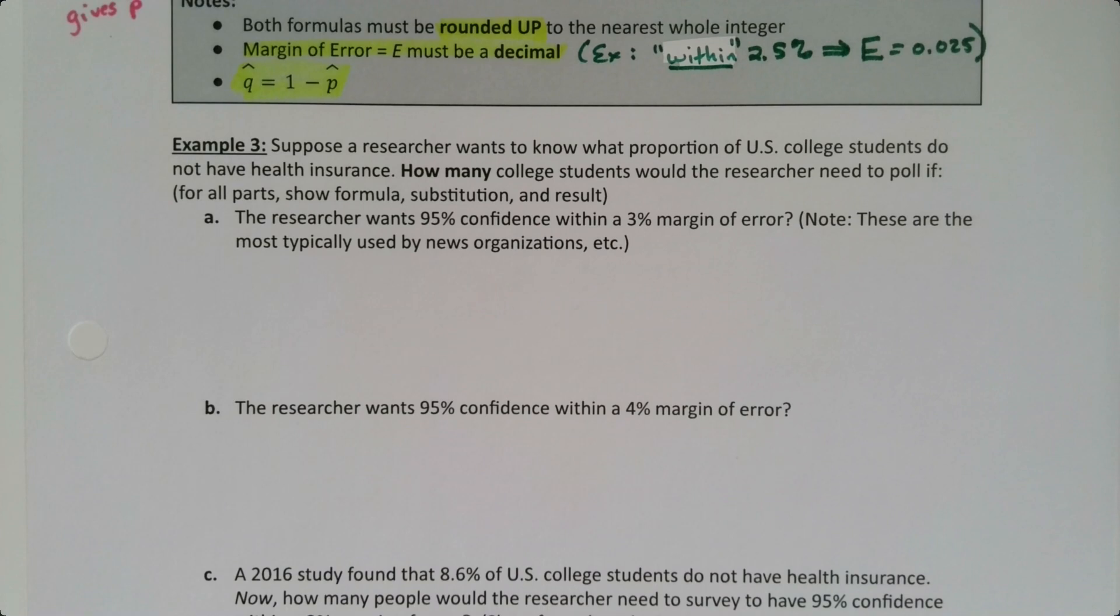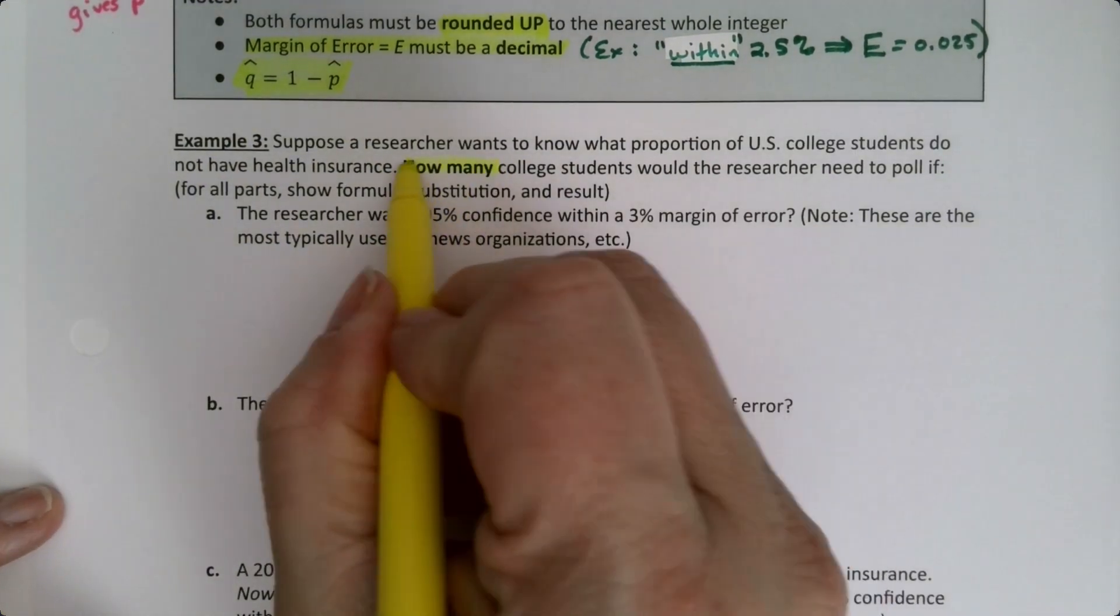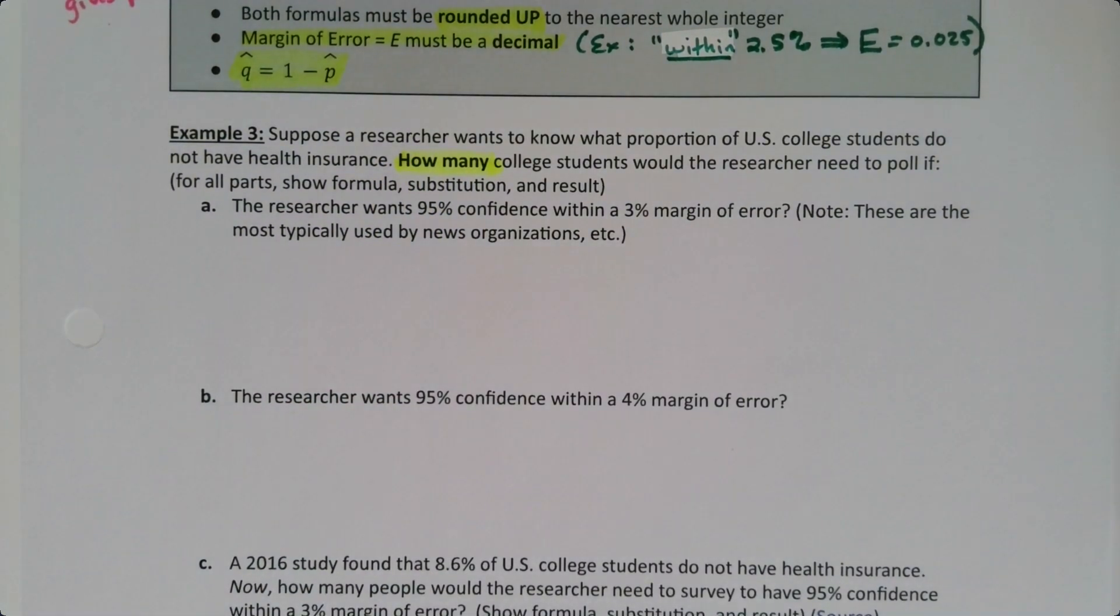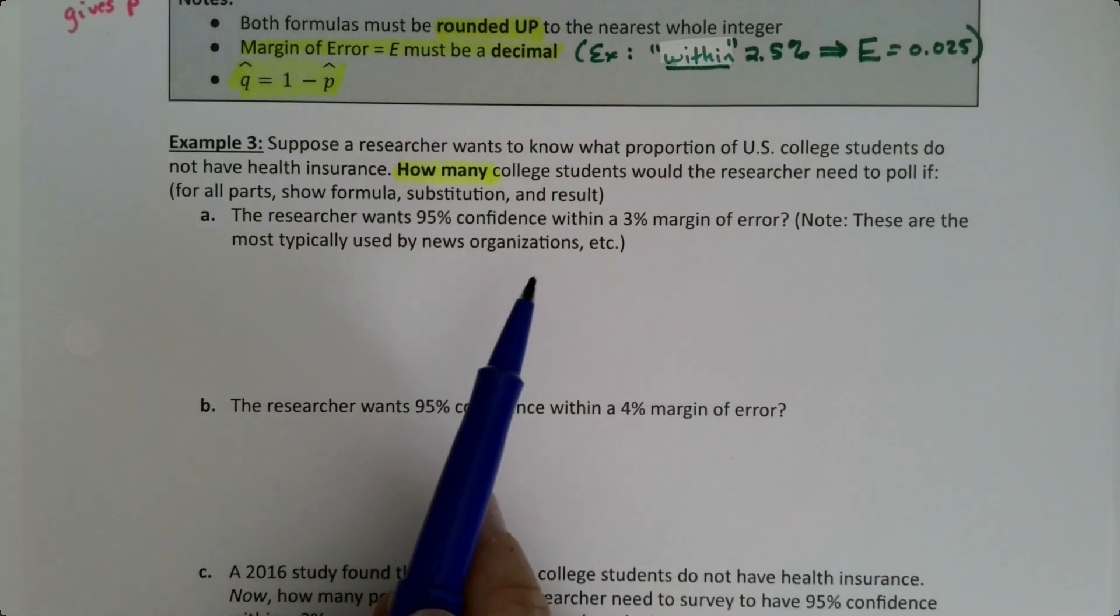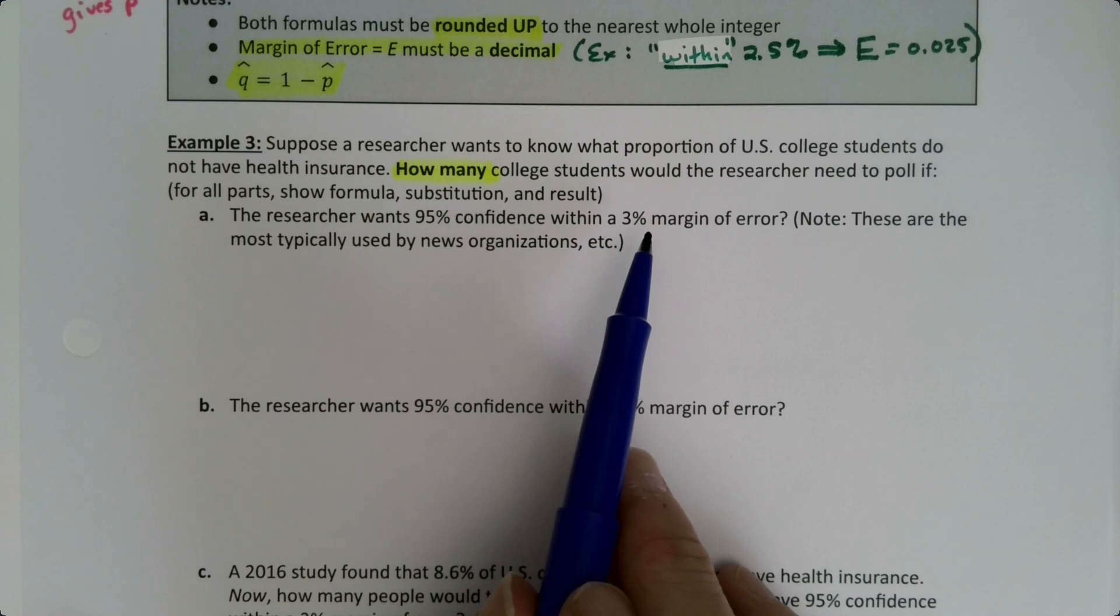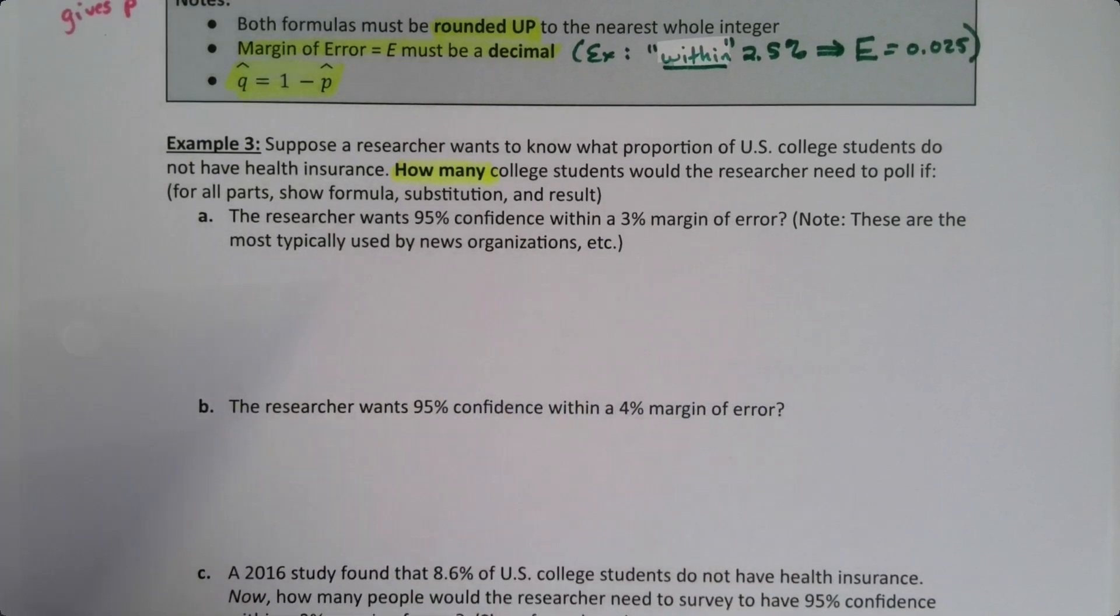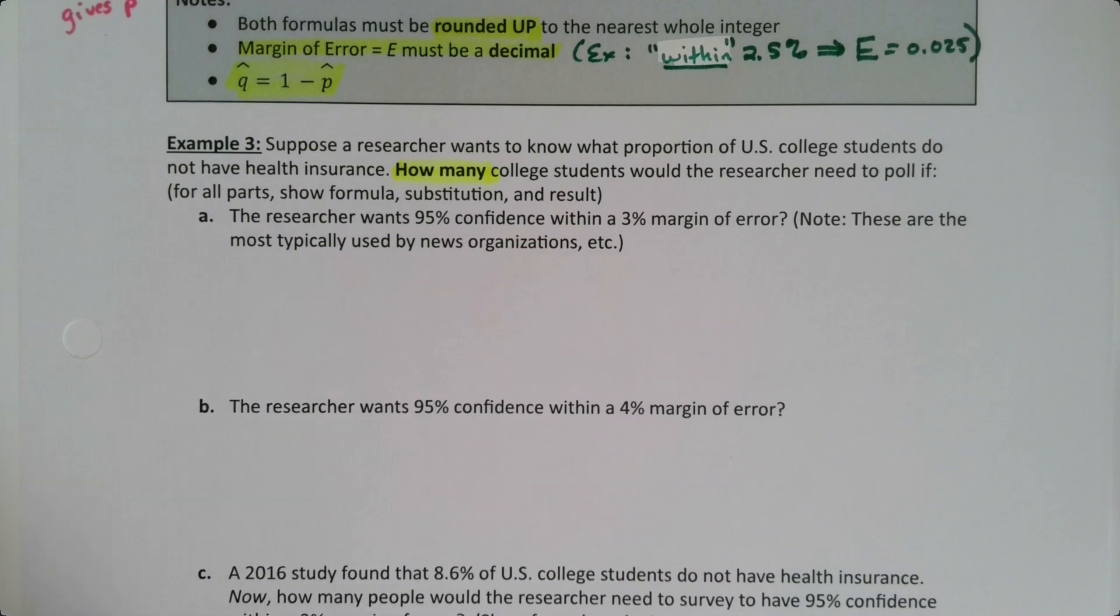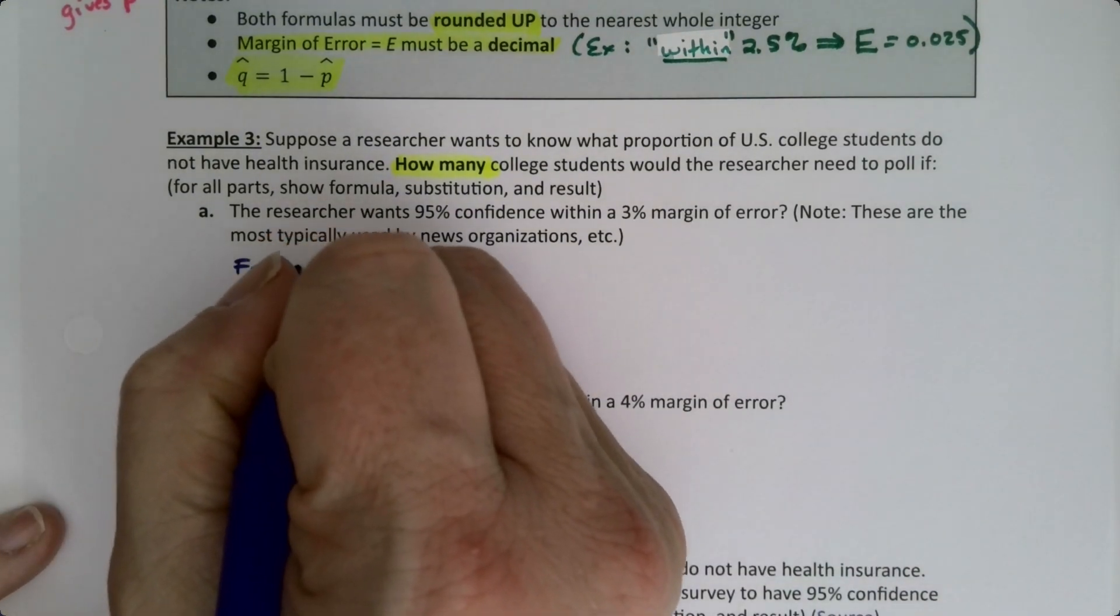Let's put this into practice. Suppose a researcher wants to know what proportion of U.S. college students do not have health insurance. How many - that's the key word - how many college students would the researcher need to poll? The researcher wants 95% confidence within a 3% margin of error. This is what's typically used by news organizations.